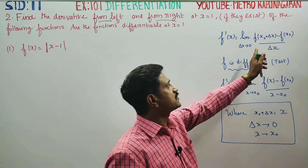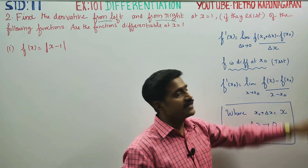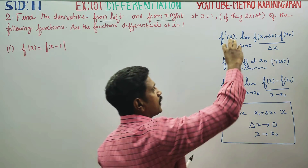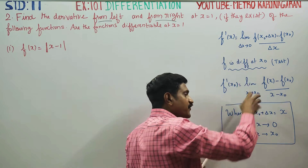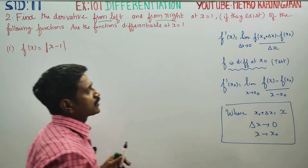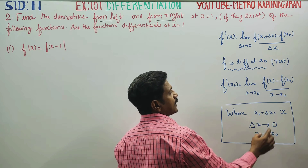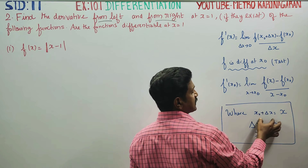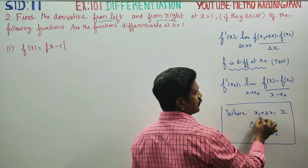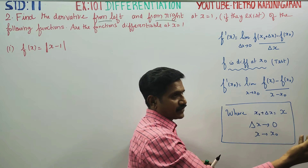The formula is: limit as delta x tends to 0 of [f(x₀ + Δx) − f(x₀)] / Δx. We can modify this formula slightly. Here, x₀ + Δx represents the new value of x.